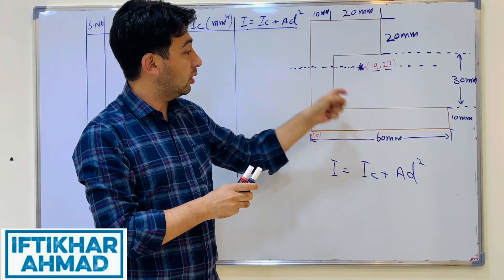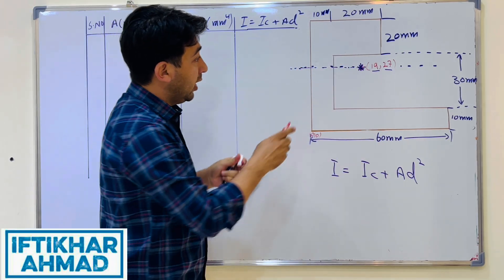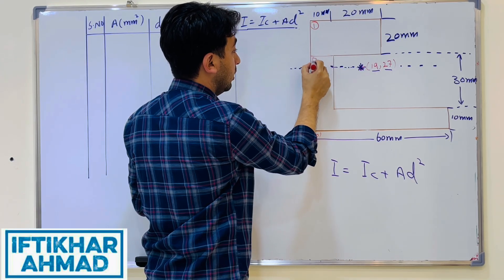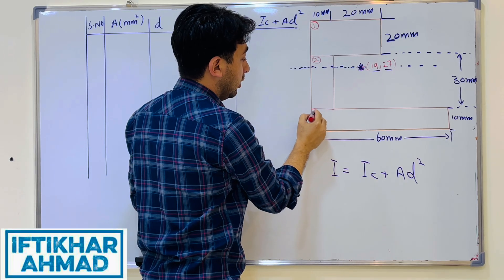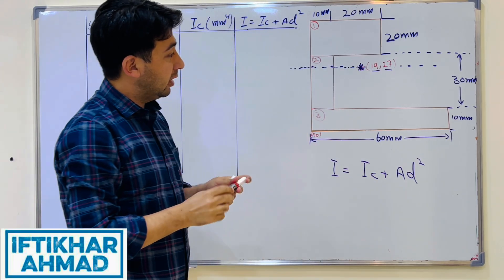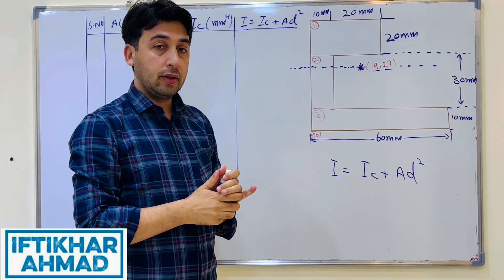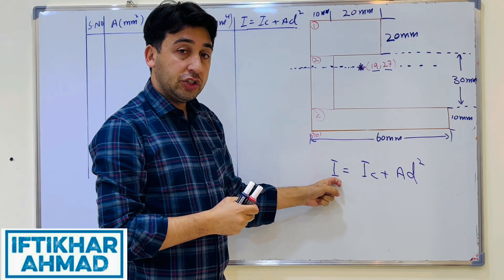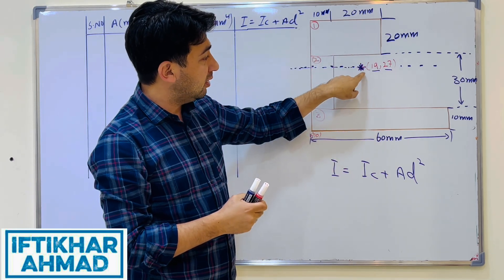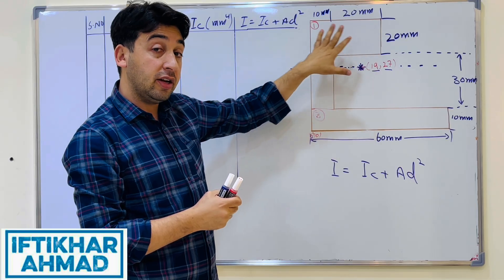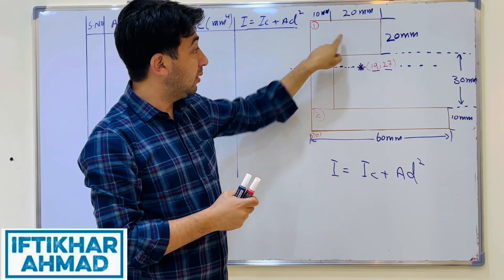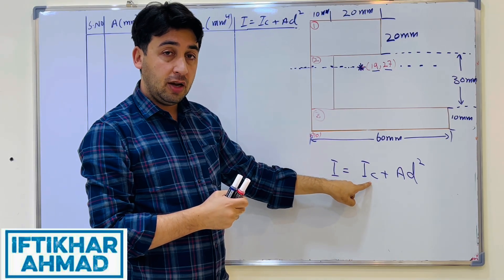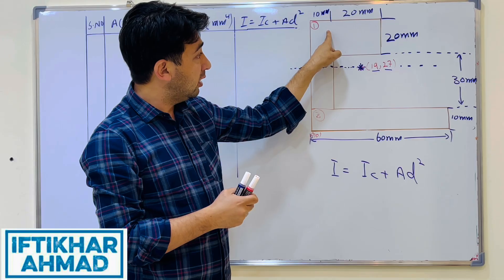For this C-section we divide it into three common geometrical shapes — three rectangles: shape one, shape two, and shape three. The formula gives us I, the moment of inertia of the composite shape about the centroidal axis of the composite shape — not about the centroid of shapes 1, 2, or 3 individually.